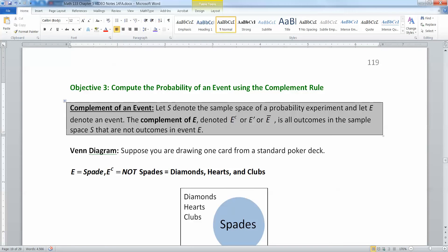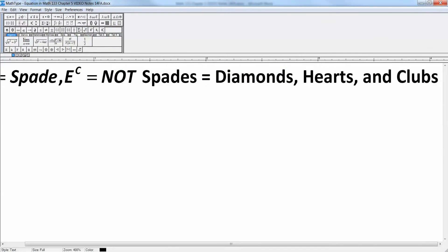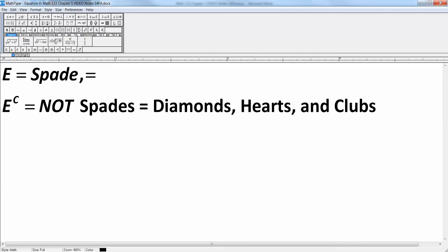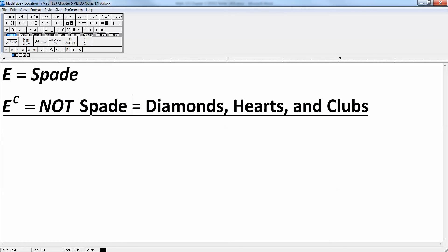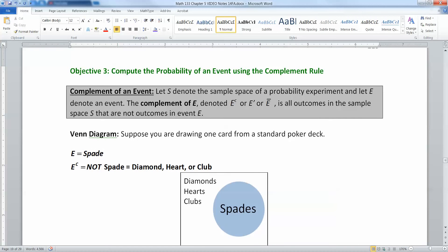Is all the outcomes in the sample space S that are not outcomes in the event. So everything that is in the sample space but is not in what you were looking at. So suppose you are talking about drawing a single card from a standard poker deck. If event E is drawing a spade, then E complement would be not drawing a spade. You could say it's not getting a spade, or you could say drawing a diamond, a heart, or a club. All the things that are not a spade. So that's the more positive way to write it.